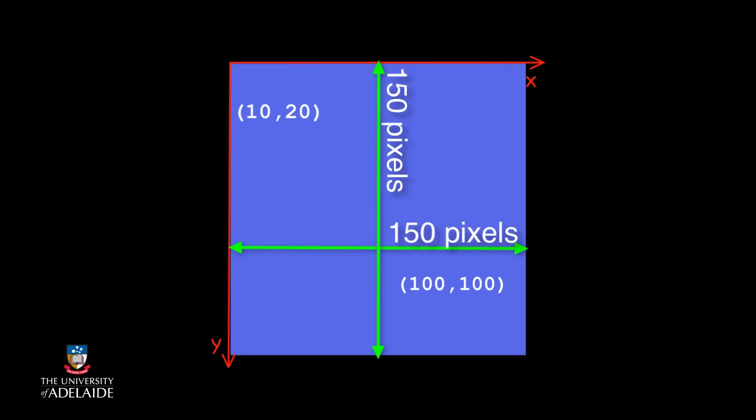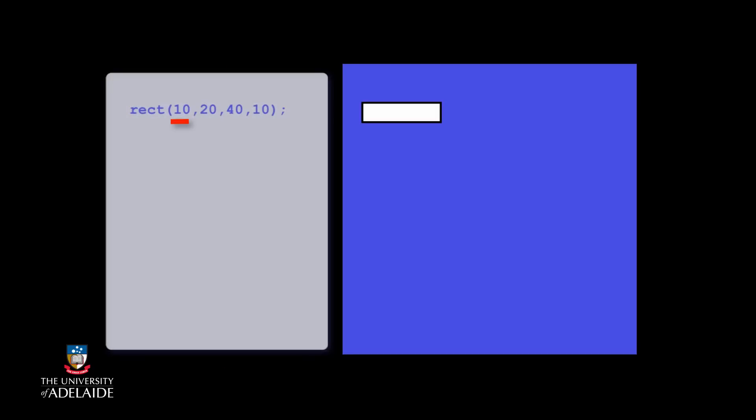The next step is to draw the first rectangle. Towards this, we'll use the Rect instruction, giving it the coordinates as the top left coordinates that we had decided on, that is, 10 and 20, and a width of 40 and a height of 10.